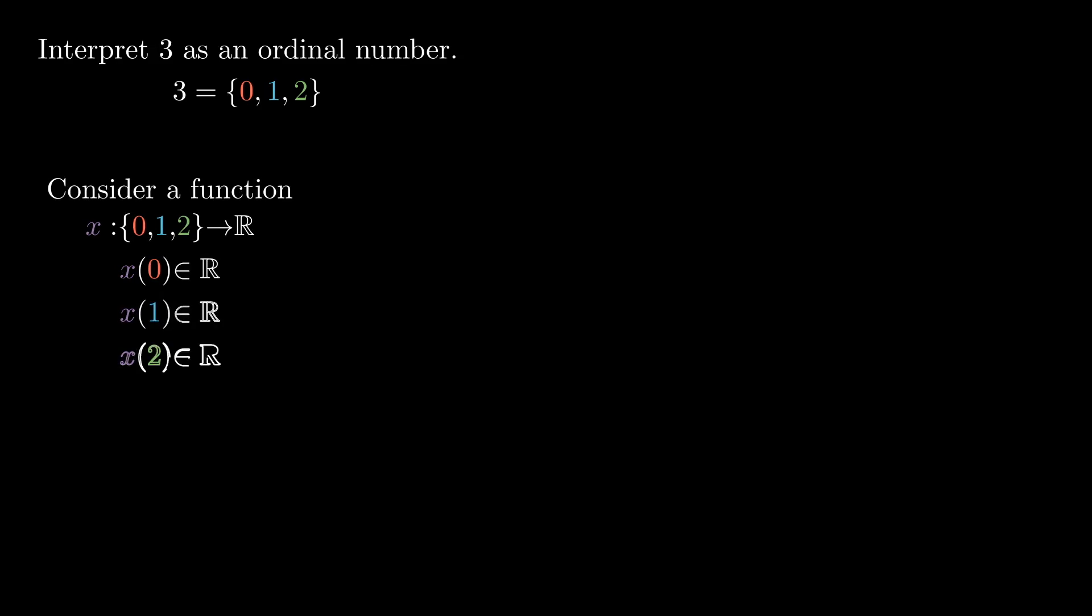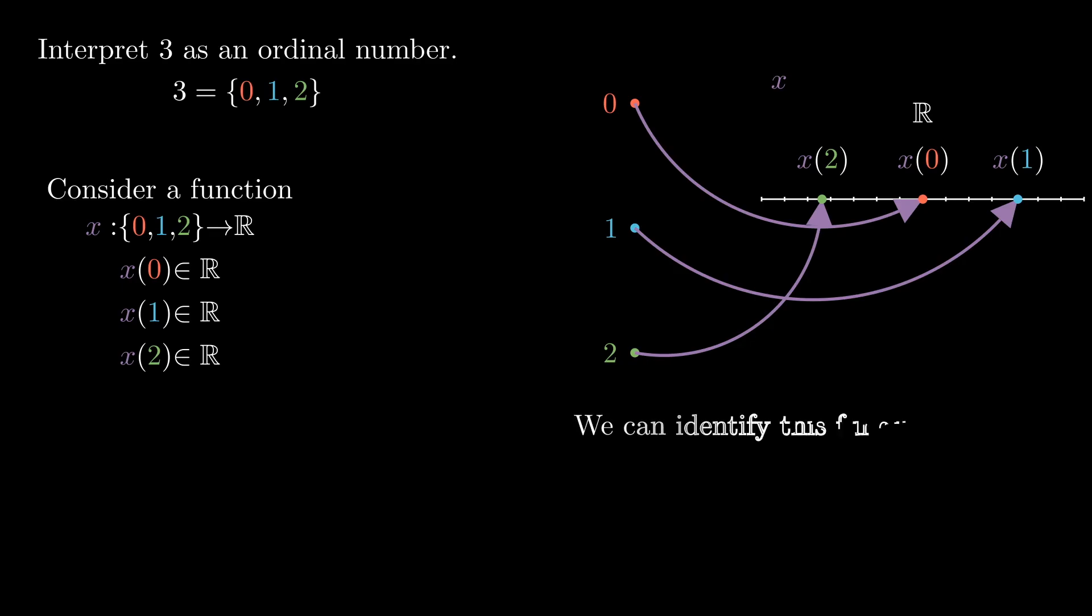Consider a function x that inputs an element from our set 3, and it outputs a real number. So in other words, x is a function that sends 0 to some real number, x sends 1 to some real number, and x sends 2 to some real number.